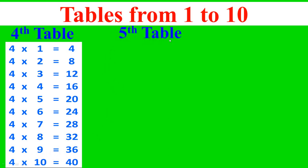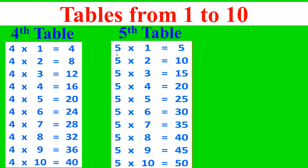Fifth table: 5 times 1 equals 5, 5 times 2 equals 10, 5 times 3 equals 15, 5 times 4 equals 20, 5 times 5 equals 25, 5 times 6 equals 30, 5 times 7 equals 35, 5 times 8 equals 40, 5 times 9 equals 45, 5 times 10 equals 50.